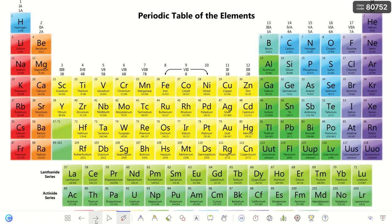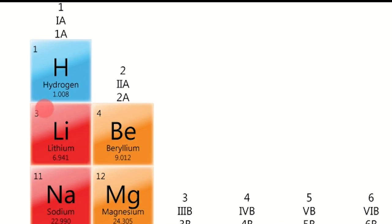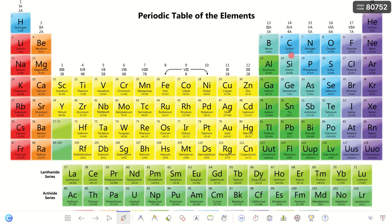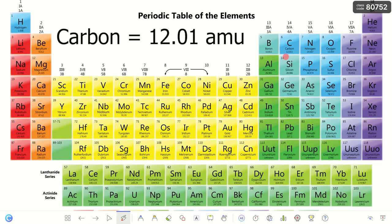Here is the periodic table. What you are looking for is the average atomic mass. For example, for hydrogen the mass would be 1.008, and for carbon it is 12.011. When using the average atomic mass of each element, use the number with two decimal places. So for carbon, we are going to use 12.01 in calculations.